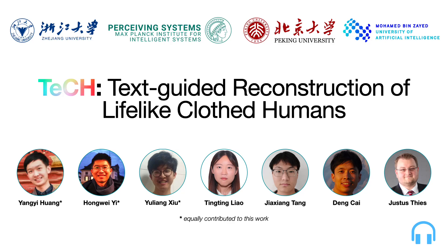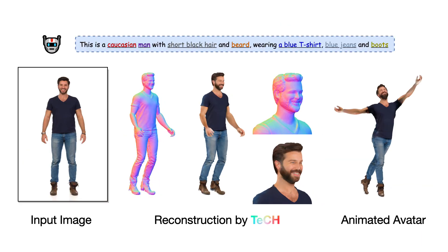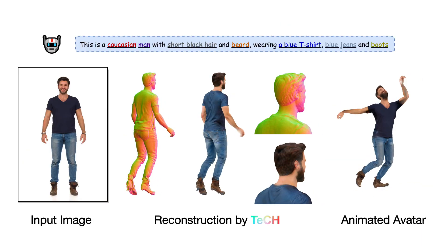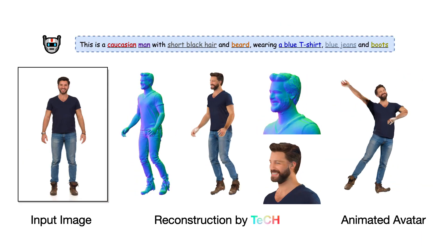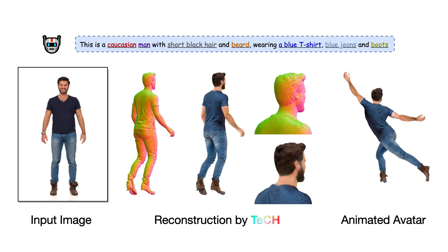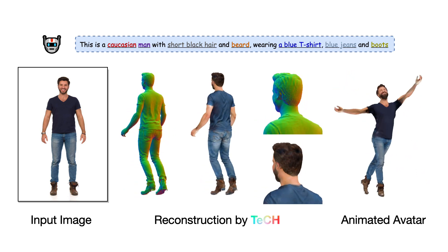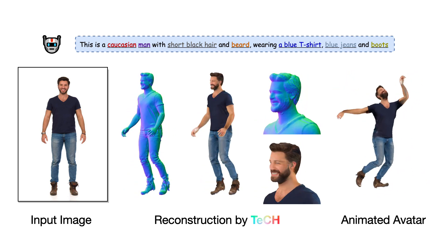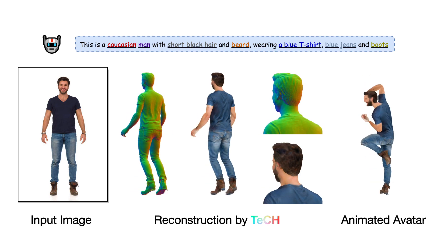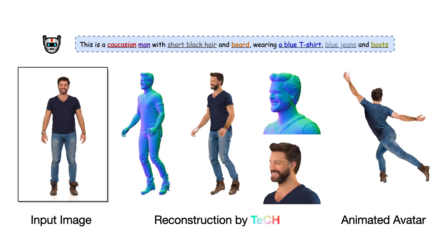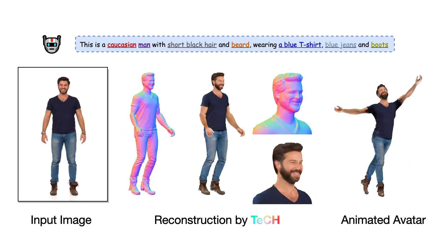We present TEC, which stands for TEC's Guided Reconstruction of Lifelike-Clothed Humans. Given a single human image, TEC reconstructs a lifelike 3D clothed human under the guidance of TEC's text prompts. This 3D human is compatible with traditional CG pipelines for rendering and animation.